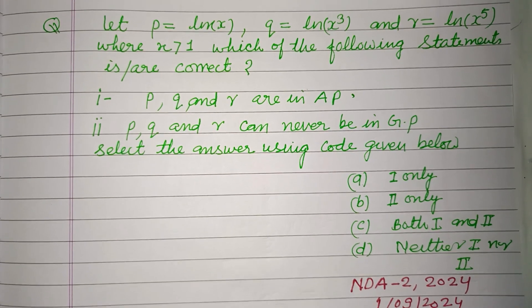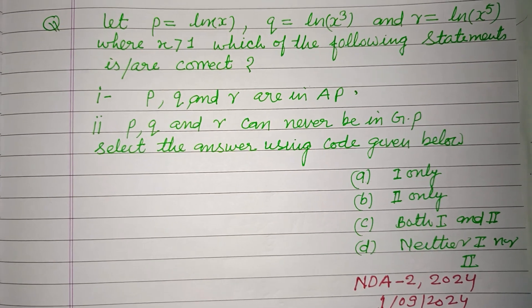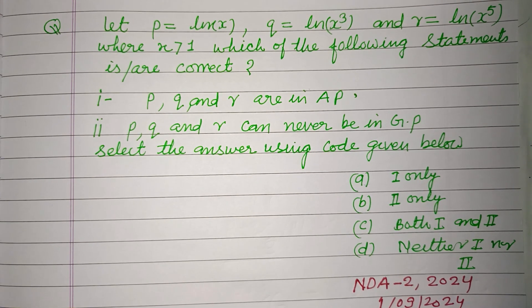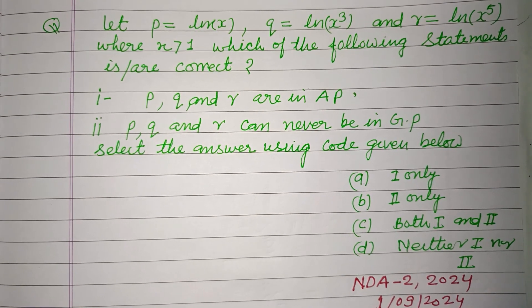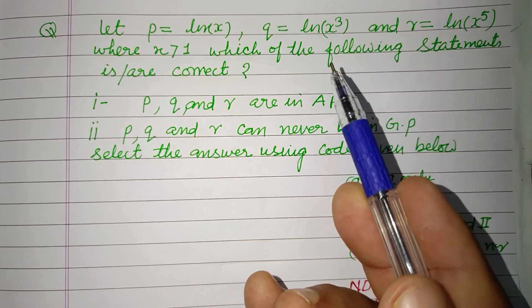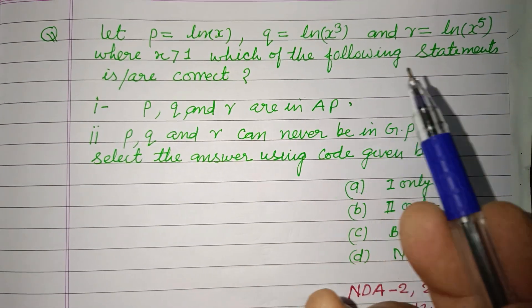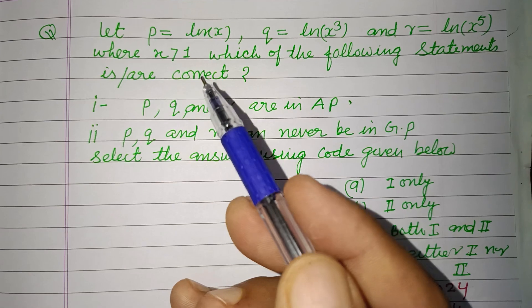Hello viewers, warm welcome to this YouTube channel. This question is from NDA Second 2024, held on 1 September 2024. Let p = ln(x), q = ln(x²), and r = ln(x⁵), where x is greater than 1.